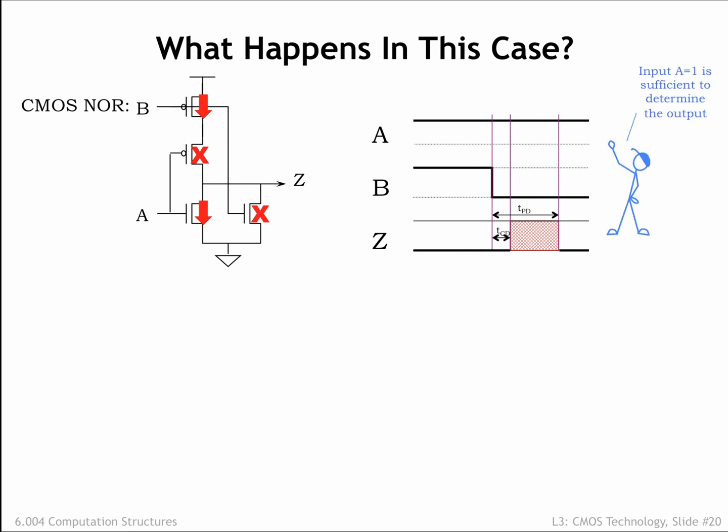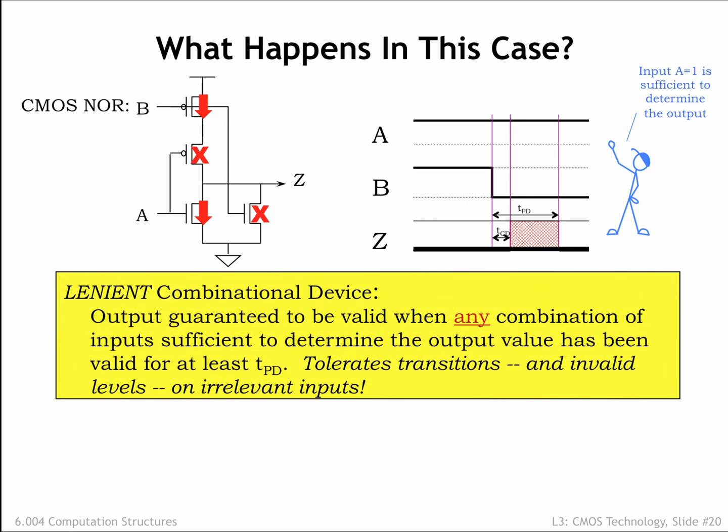In the case of a CMOS NOR gate, when one input is a digital one, the output will be unaffected by transitions on the other input. A lenient combinational device is one that exhibits this behavior, namely that the output is guaranteed to be valid when any combination of inputs sufficient to determine the output value has been valid for at least TPD. When some of the inputs are in a configuration that triggers this lenient behavior, transitions on the other inputs will have no effect on the validity of the output value.